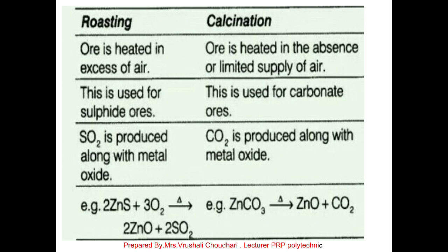Roasting is used for sulfide ores while calcination is used for carbonate ores. In the roasting process, sulfur dioxide is produced along with a metal oxide because sulfur is present in the ore. The calcination process is used to remove carbonate impurities.